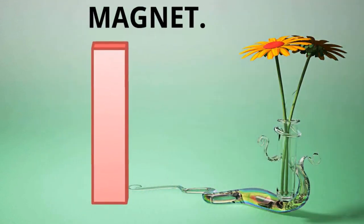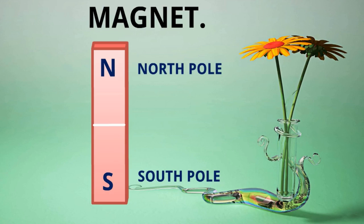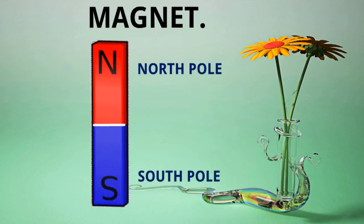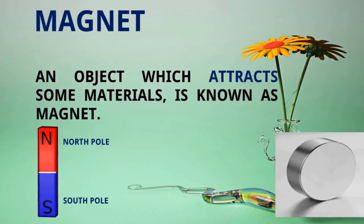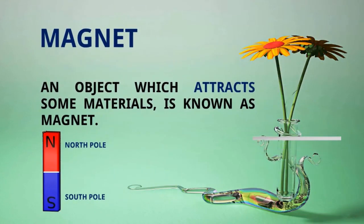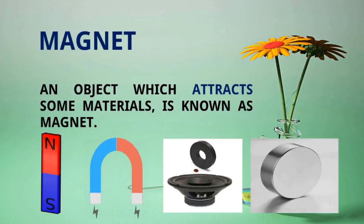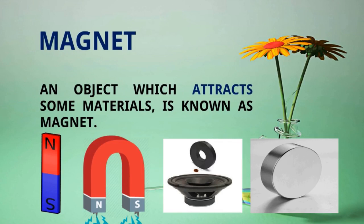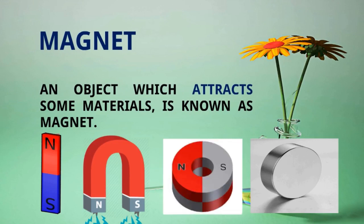Originally it is looking like this. So all other types of magnets are also having north and south pole. So this is the north and south pole of the U type. This is the north and south pole of ring type. And this is the north and south pole of disc type magnets.